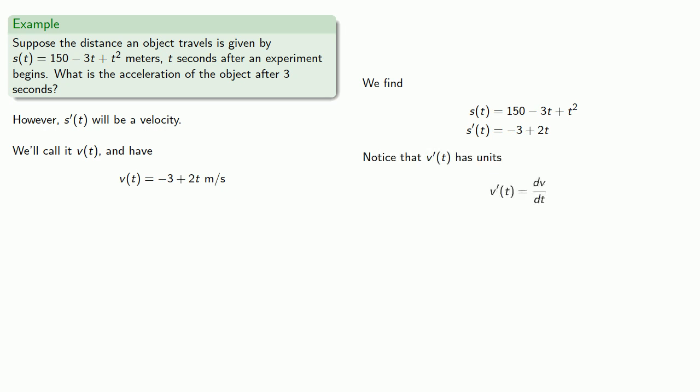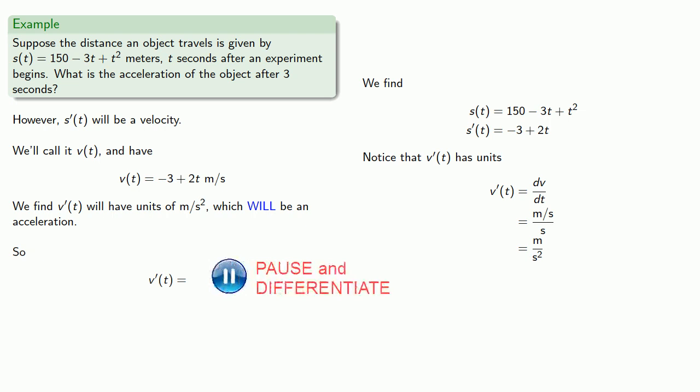So now we have a function for our velocity, and notice that v'(t) has units—it's dv/dt. v is measured in meters per second, so v' will have units of meters per second squared, which is an acceleration. So let's find v'(t), and v'(3) is 2 meters per second squared.